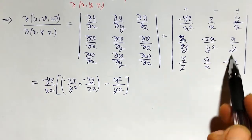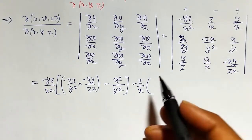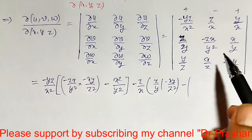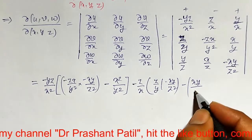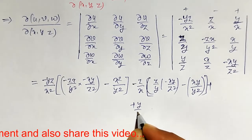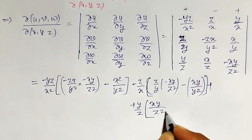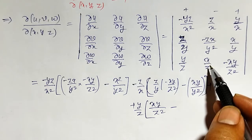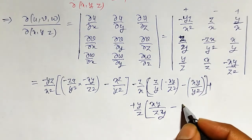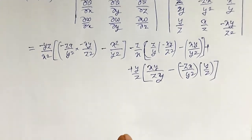Continuing the expansion: the second element of the first row is z/x, taken with a minus sign, multiplied by its 2×2 minor (z/y)(−xy/z²) minus (x/y)(xy/yz). The third element is y/x, taken with a plus sign, multiplied by its minor (xz/y)(x/z) minus (−xz/y²)(xy/yz). After expanding all three cofactors, we combine the results and simplify.